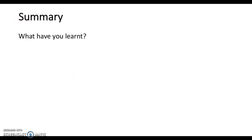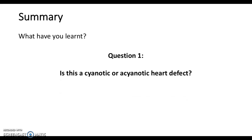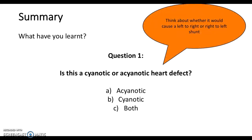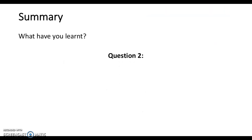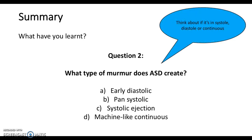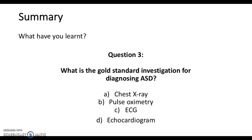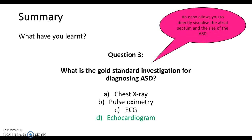So, what have we learnt? Let's go back over the multiple choice questions. Question 1: Is this a cyanotic or an acyanotic heart defect? It's acyanotic because it's a left-to-right shunt. Question 2: What type of murmur does an ASD create? It's a systolic ejection murmur. Question 3: What is the gold standard investigation for diagnosing ASD? It's an echocardiogram, because you can visualise the atrial septum and the size of the ASD to determine whether treatment is necessary.